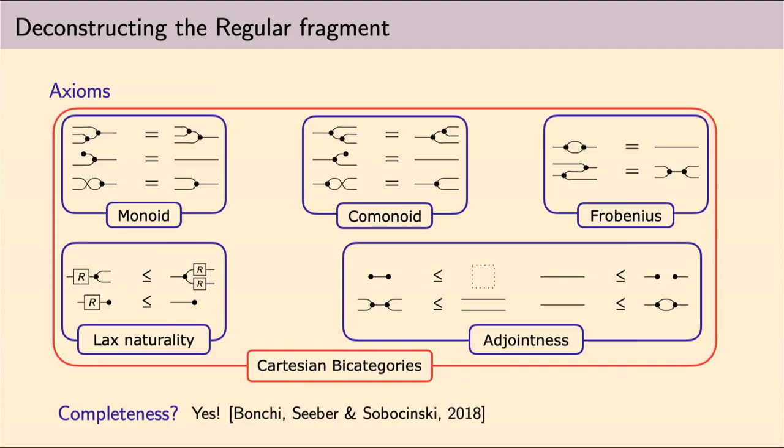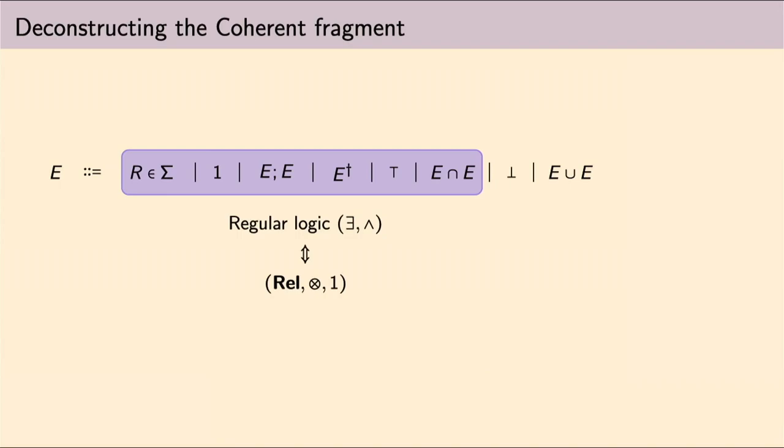And, this axiomatization is actually complete for Rel, seeing it as a monoidal category. This means that I can take any two diagrams from my syntax with the appropriate types, and they will be equal by the set of axioms whenever their interpretations in Rel as relations are also equal.